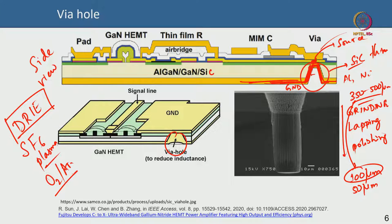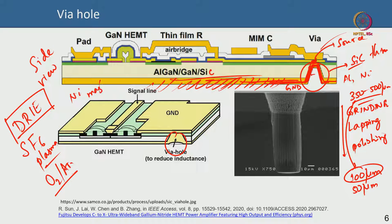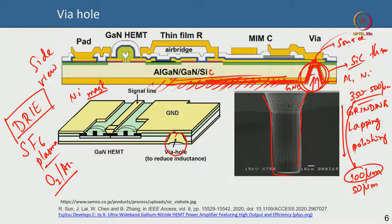When etching SiC for the via hole, you flip the wafer upside down and cover the rest of the material with a nickel metal mask. The exposed area is then plasma etched to create the via hole. This SEM image shows a hole that has been created in this manner.